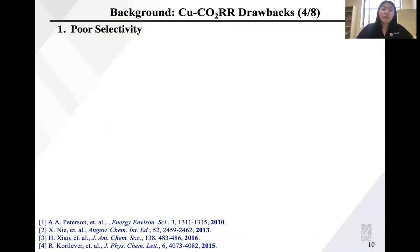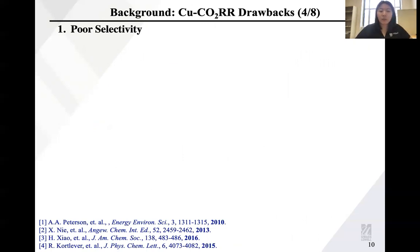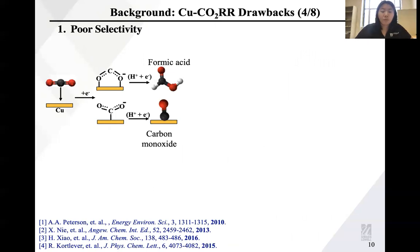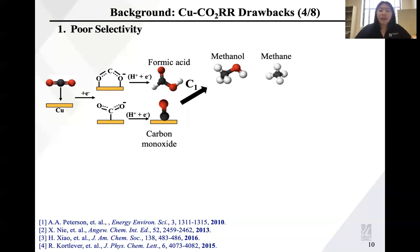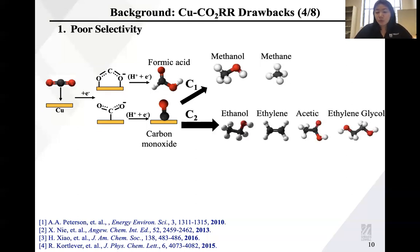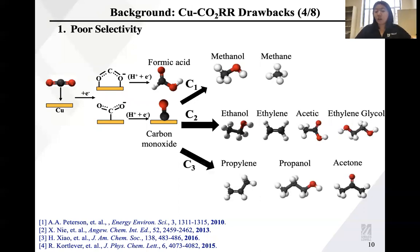However, it faces challenges. One of the challenges is that the selectivity to ethylene cannot reach 70%; the selectivity to a single product is poor. Currently, the catalyst used is a copper-based catalyst because copper is a low-cost transition metal that can convert CO2 to multi-carbon hydrocarbons. But it also converts to other products such as formic acid, carbon monoxide, methanol, and methane — those C1 products — as well as C2 chemicals such as ethanol, ethylene, and acetate, and small portions of propylene and acetone.